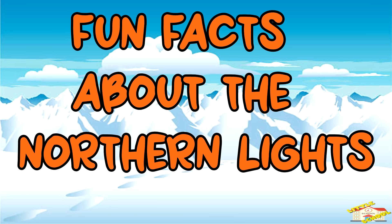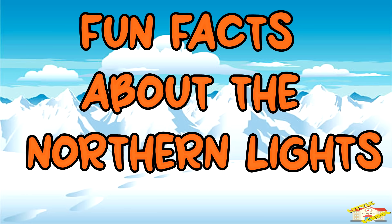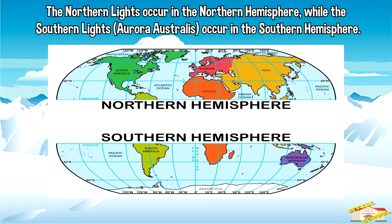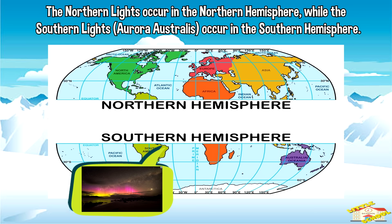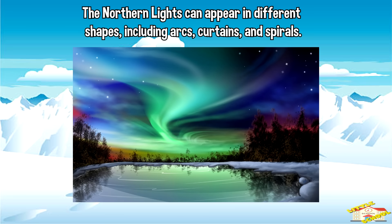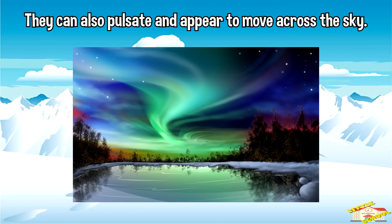Now here are some fun facts about the northern lights! The northern lights occur in the northern hemisphere, while the southern lights — aurora australis — occur in the southern hemisphere. The northern lights can appear in different shapes, including arcs, curtains, and spirals. They can also pulsate and appear to move across the sky.